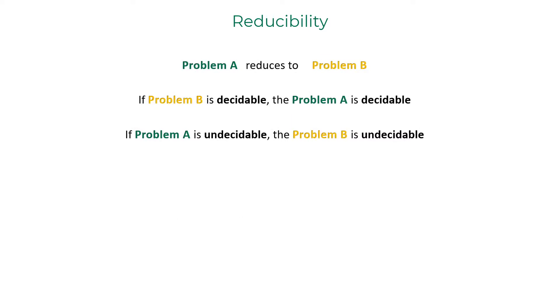When a problem A reduces to problem B, if problem B is decidable then problem A is decidable. If we already know that problem A is undecidable, that will imply a decider can never exist for B. Hence B would be undecidable as well.